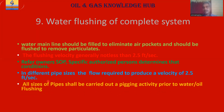All sizes of pipe shall carry out a pigging activity prior to water or oil flushing. Pigging means pipeline inspection gauging — different types of brushes are used. There may be a lot of damage, moisture, and rust from construction. You use wire brushes or pigs to clean the inside of the pipe. There are many different types of pigs, and according to the requirement we select the appropriate pigging activity.